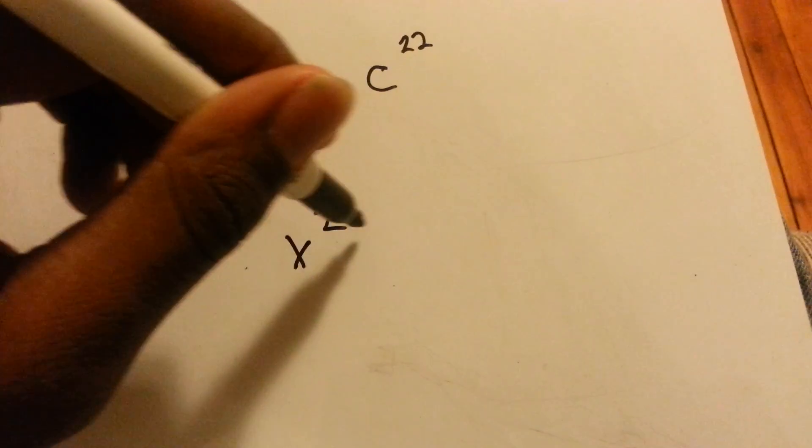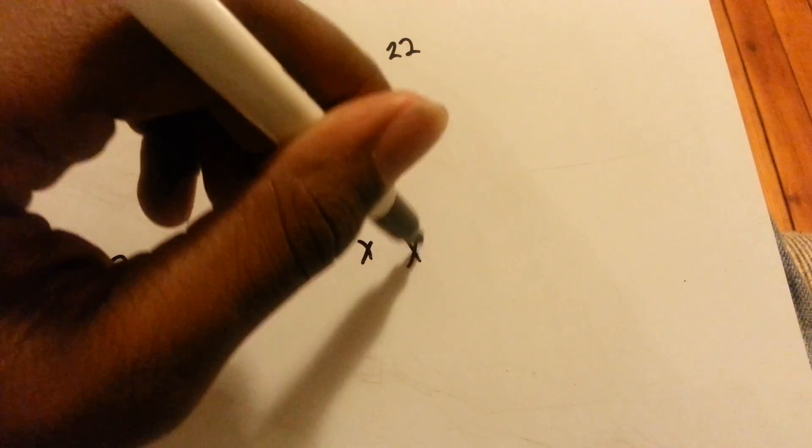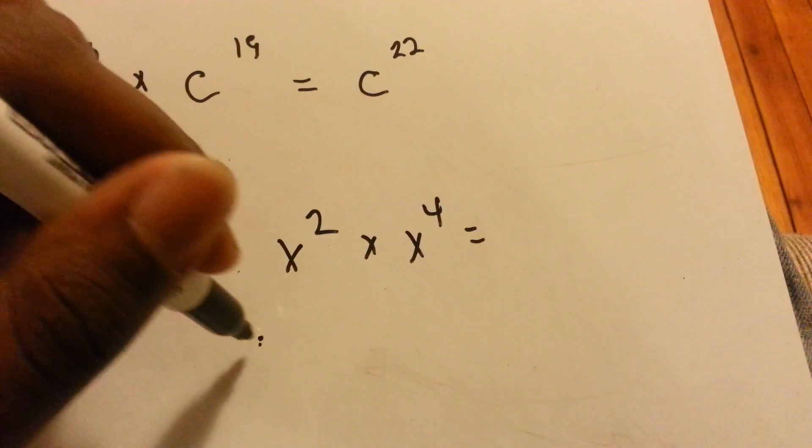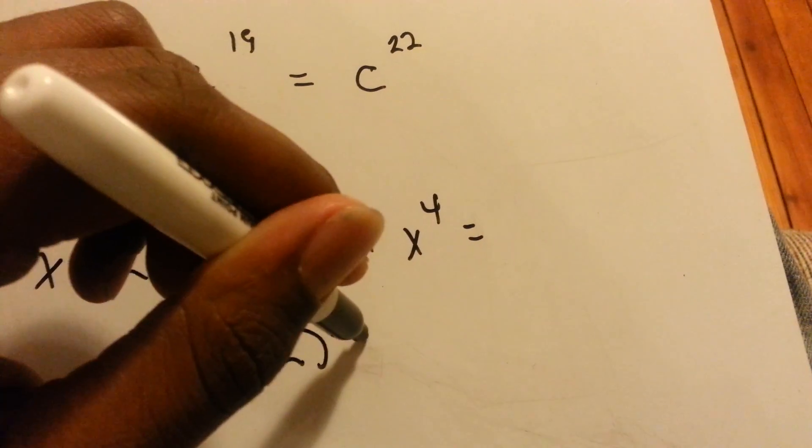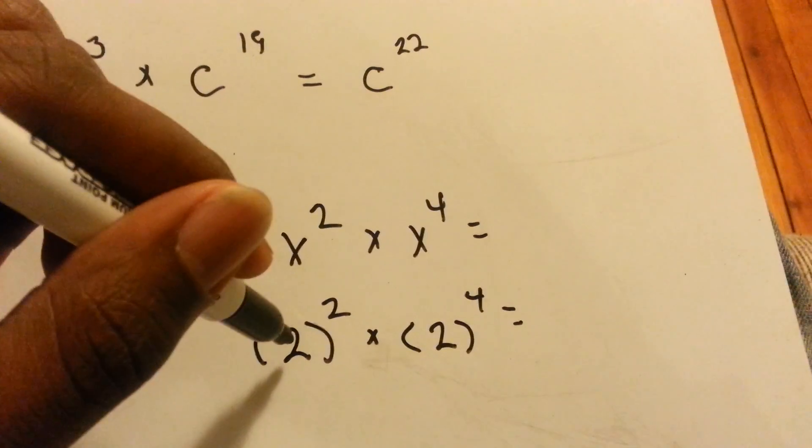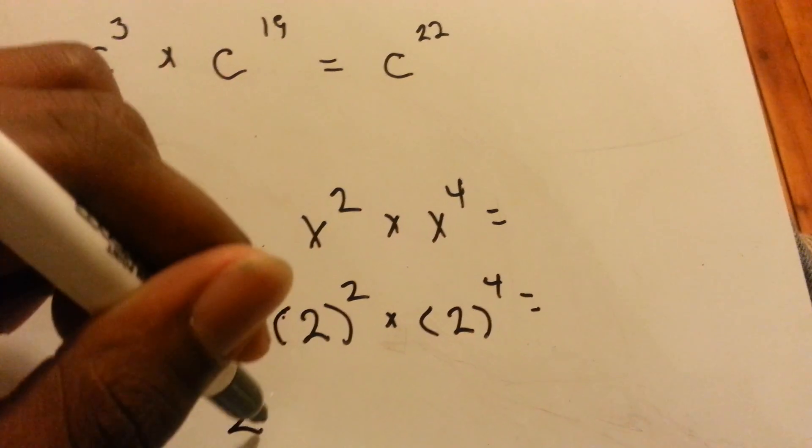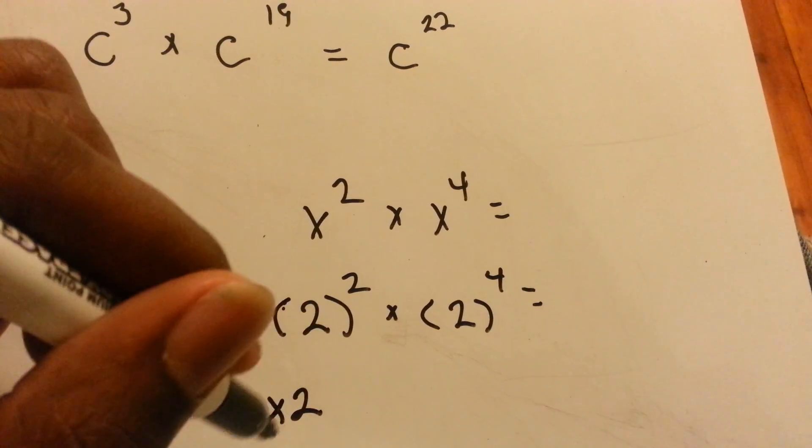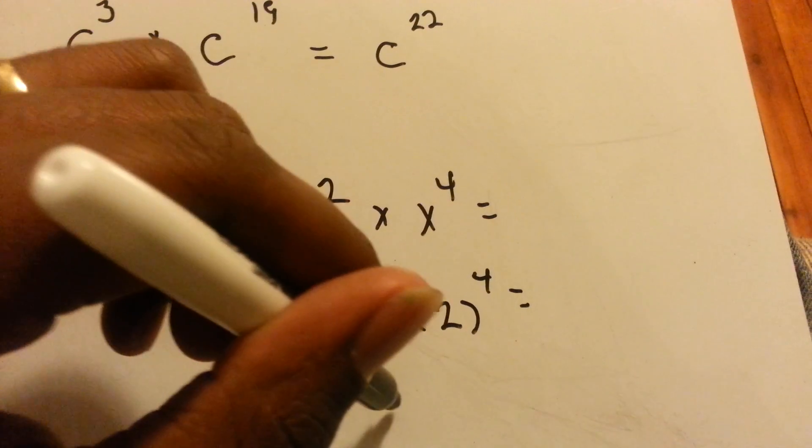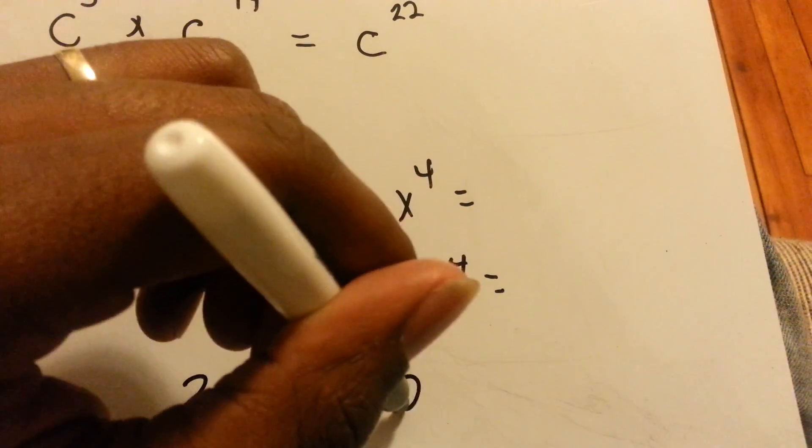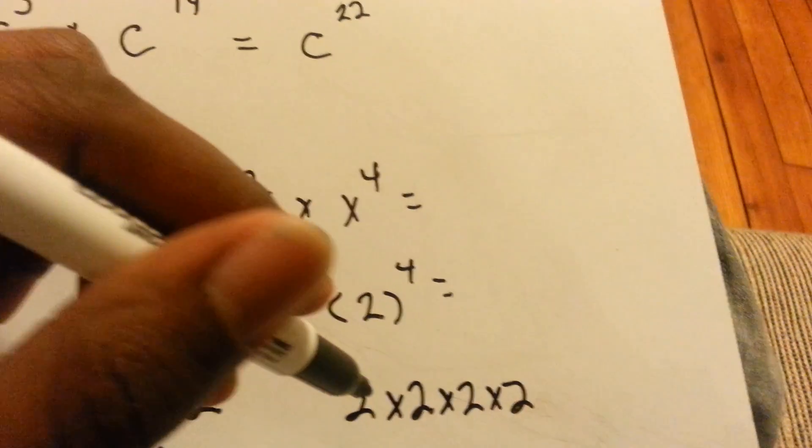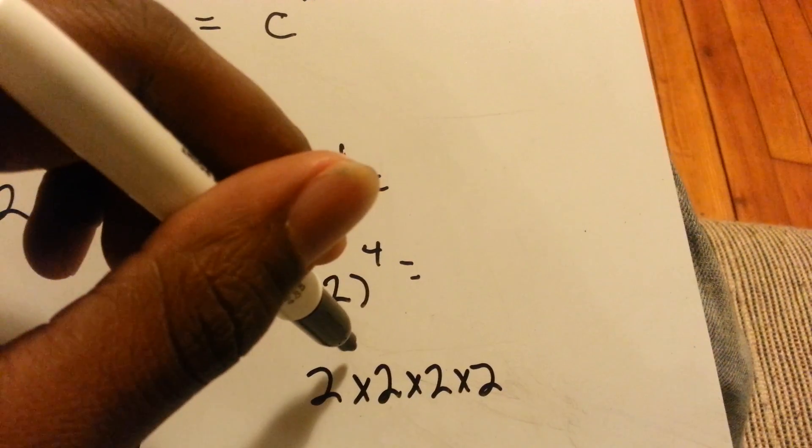x squared times x to the 4th equals what? So if x equals 2, we have 2 squared times 2 to the 4th. 2 squared just means 2 times 2, and that equals 4.